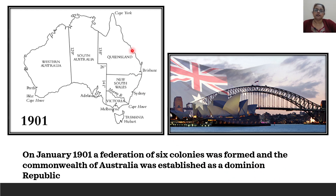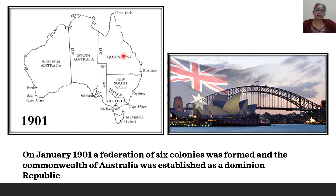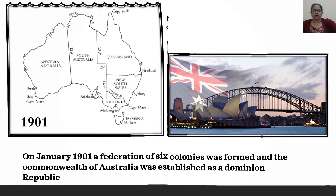In the year 1901, Australia's map looked like this, with Western Australia, South Australia — which was later divided into two — Queensland, New South Wales, and Victoria.